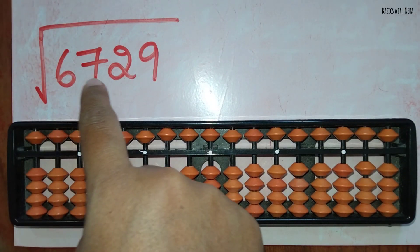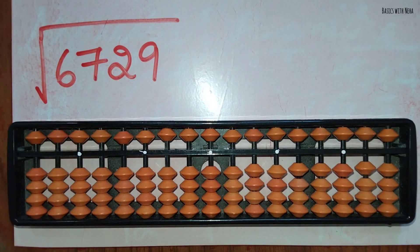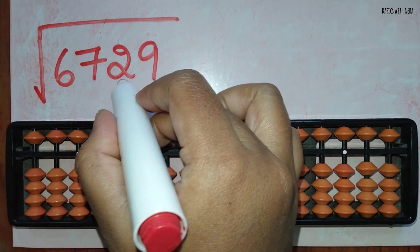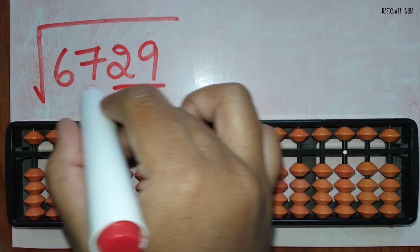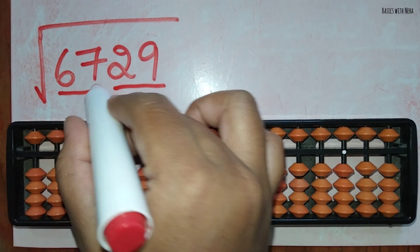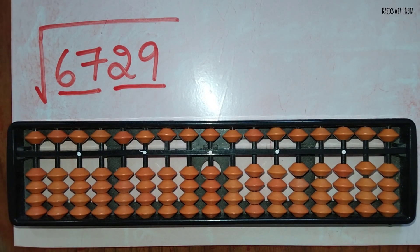Square root of 6729. So we are going to place this number here and we know that we have to group the square root into two numbers. So one is 67, the other one is 29.